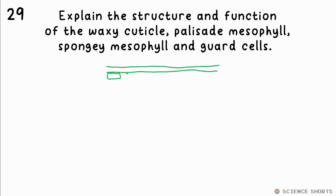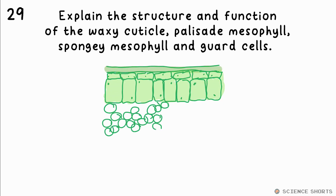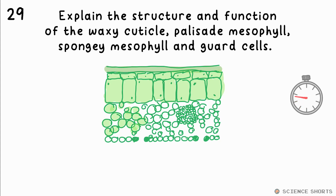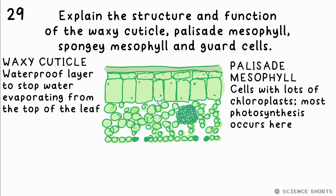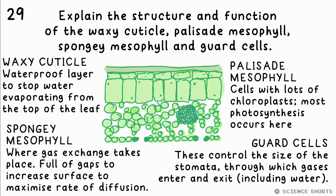Question 29. Explain the structure and function of the waxy cuticle, palisade mesophyll, the spongy mesophyll and guard cells in a leaf. The waxy cuticle stops water evaporating from the top of a leaf. The palisade mesophyll is made of cells with lots of chloroplasts — this is where most photosynthesis takes place. The spongy mesophyll contains gaps allowing a fast rate of gas exchange. The guard cells in the lower epidermis control the size of the stomata — the holes through which gases enter and exit the leaf.